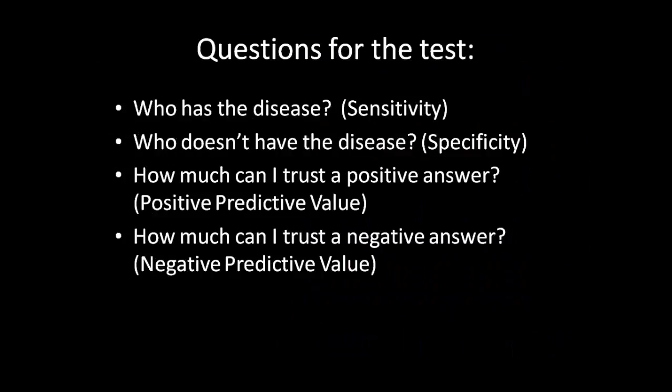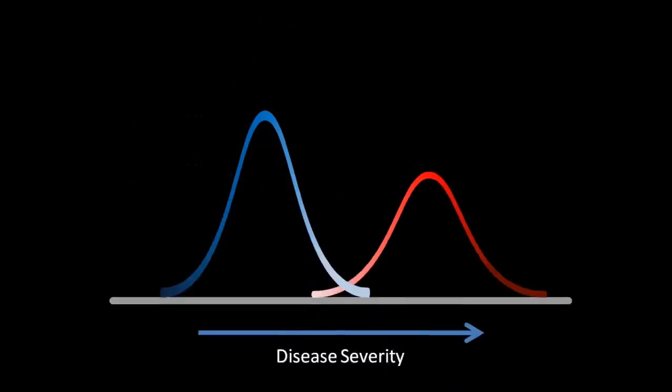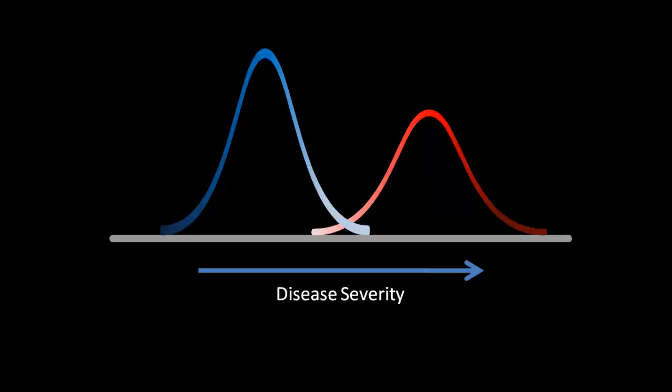This test needs to have certain parameters. Ideally, it should be able to tell us who has the disease and who doesn't have the disease. We should also be able to know how much we can trust a positive answer for a test and how much we can trust a negative answer. No test in medicine is 100% perfect, and no test will perfectly be able to tell you if a patient does or doesn't have a disease. Just like last time, we have a patient disease spectrum.